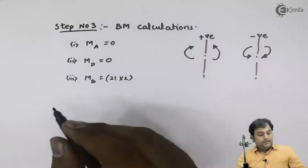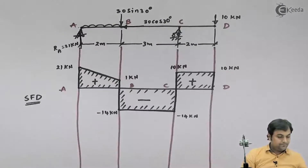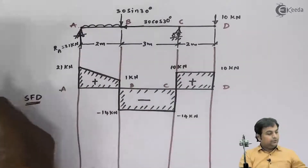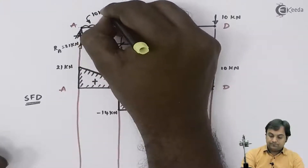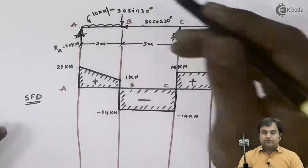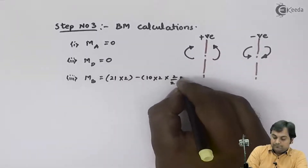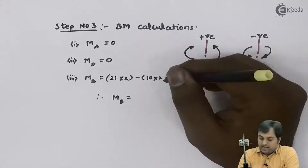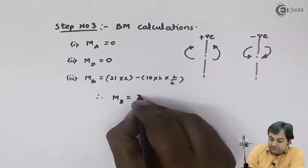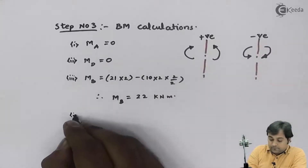So I have 21 into 2. The intensity of UDL given in the problem is 10 kilonewton per meter, so I have 10 into 2 acting at half the distance, so it would be 10 into 2 into half of 2. Therefore moment at point B equals 42 minus 20, which gives 22 kilonewton meter.